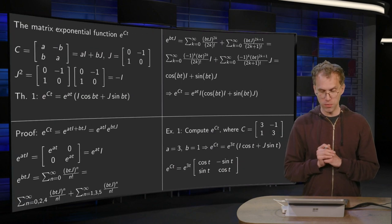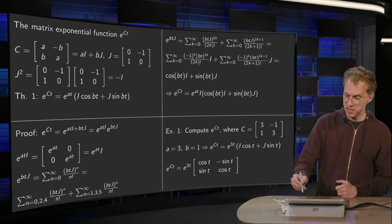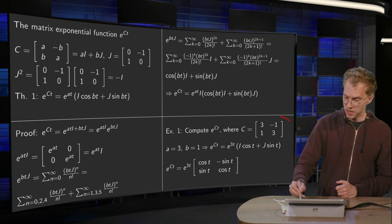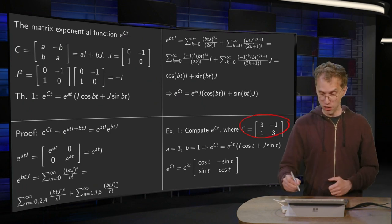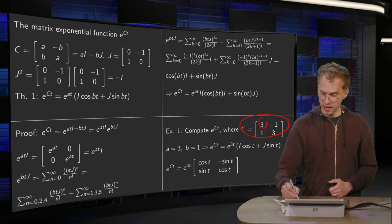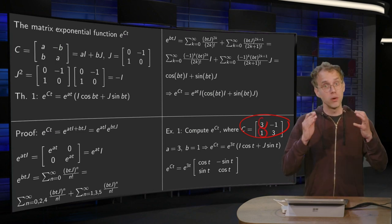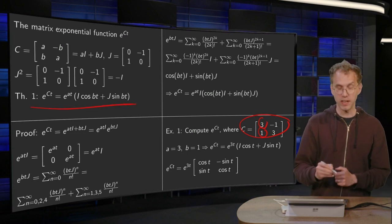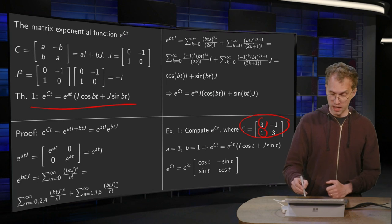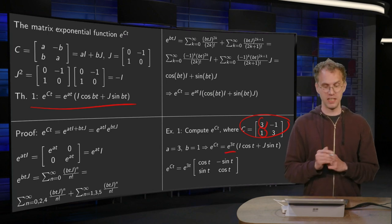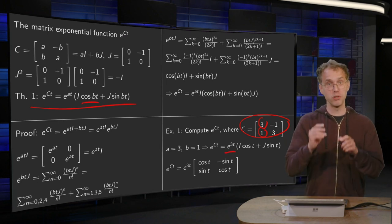Now let's do it in a small example. Compute e to the power ct where c is the scaling rotation matrix over here. Now in this case we can read off a equals 3 and b equals 1. So what do we get for e to the power ct? We can plug in a equals 3 and b equals 1. Gives us an e to the power 3t.